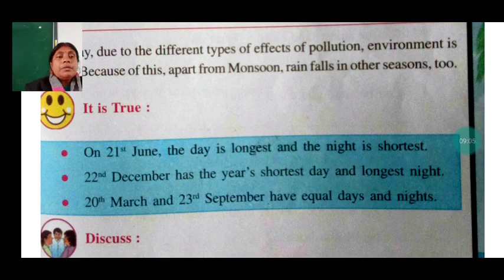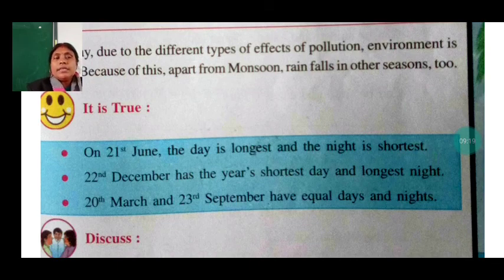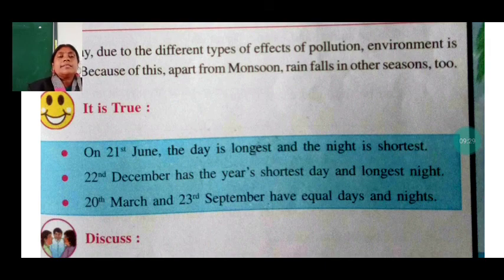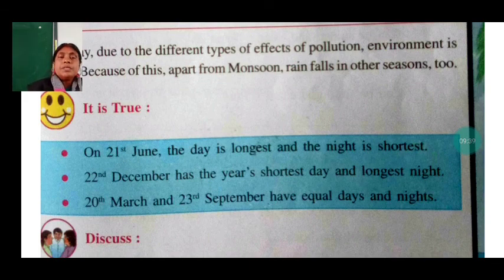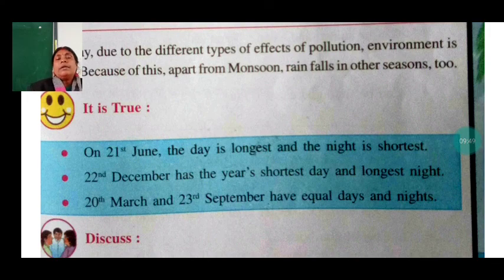You have to remember these important dates: on 21st June, the day is longest and the night is shortest. On 22nd December, it is the year's shortest day and longest night. On 20th March and 23rd September, day and night are equal. These are the key dates you must remember.